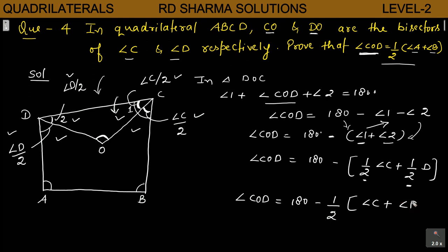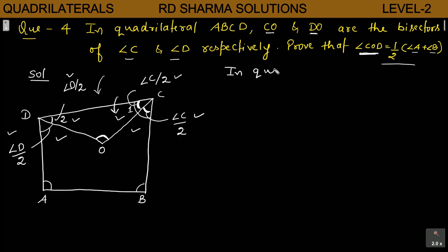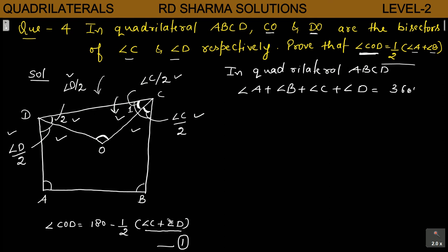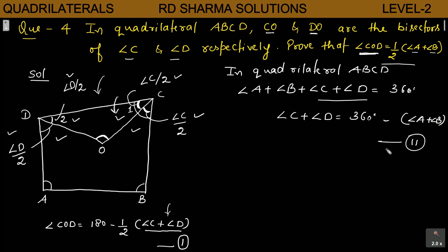Jo humne triangle mein karna tha woh hum ne yahan kar liya Angle Sum property ko use karke. Ab aapko use karna hai Angle Sum property of the quadrilateral. In quadrilateral ABCD, sabhi angles ka jo sum hoga woh 360 degree ke barabar hoga. To aap yahan par likhenge: Angle A plus Angle B plus Angle C plus Angle D is equal to 360 degree. Equation 1 mein aapka aata hai Angle C plus Angle D, lekin aapko iska value nahin pata. To aap yahan se value nikal lenge: Angle C plus Angle D is equal to 360 degree minus (Angle A plus Angle B). Yeh ho jayegi Equation 2.